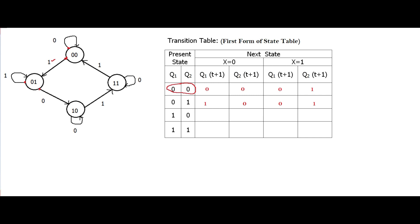For present state 10, we again look only at the tail ends. One tail end tells us when x equals 1, the transition goes to 11. The other tail end tells us when x equals 0, the state goes to 10. So when x equals 0, the next state is 10, and when x equals 1, the next state is 11.